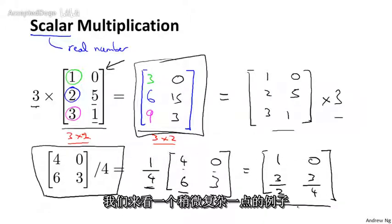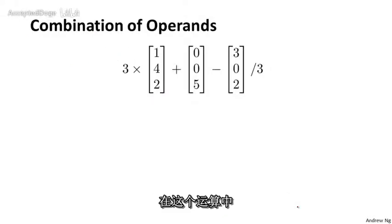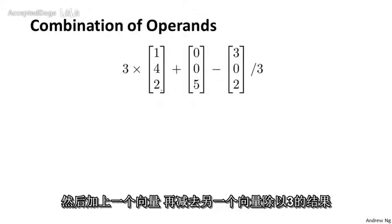Finally, for a slightly more complicated example, you can also take these operations and combine them together. So in this calculation, I have 3 times a vector plus a vector minus another vector divided by 3.